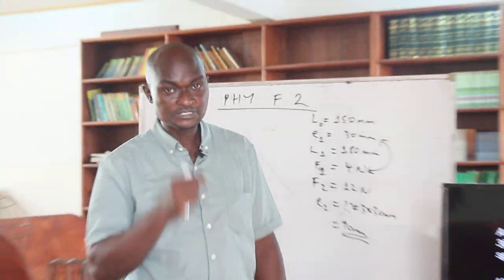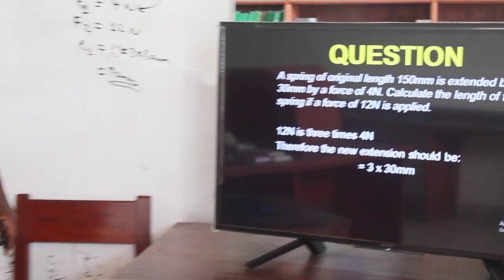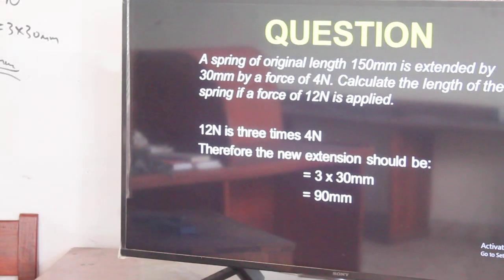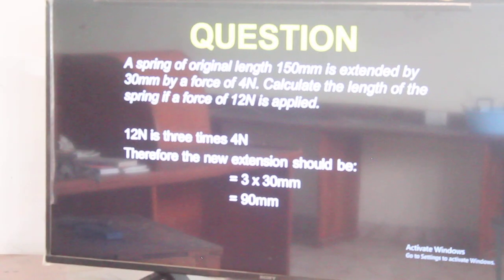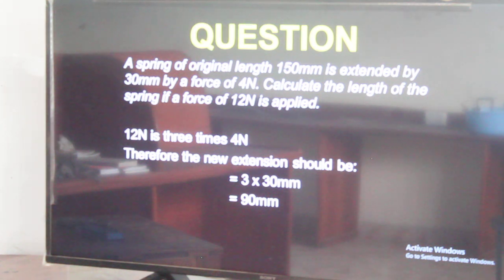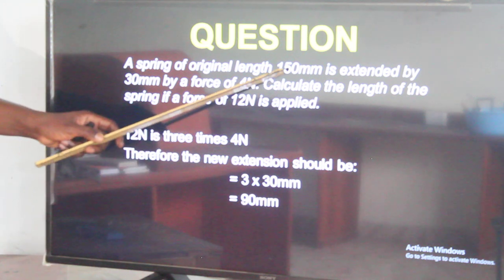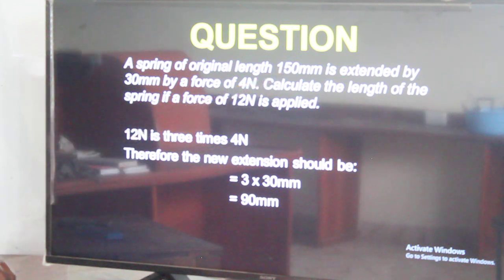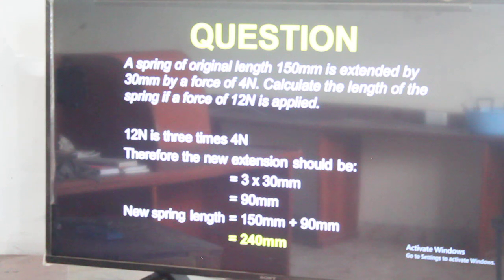So, to answer the question: with 12 N applied, the extension will be 3 times 30, which is 90 mm. But the question asks for the length, not the extension. So we add this extension to the original length of 150 mm to get the new length L2. L2 equals L0 plus extension 2, giving L2 equal to 240 mm.